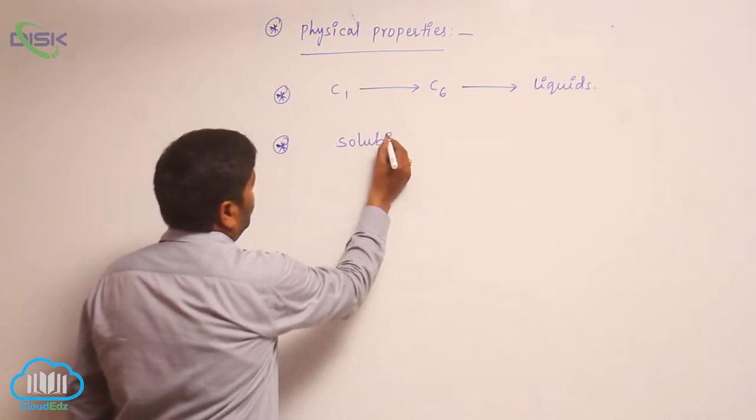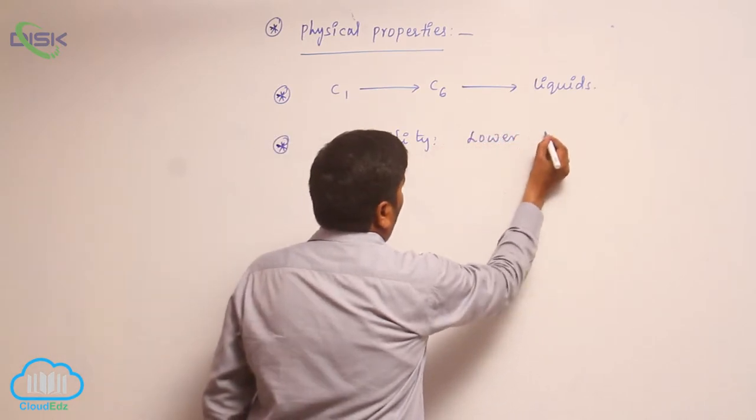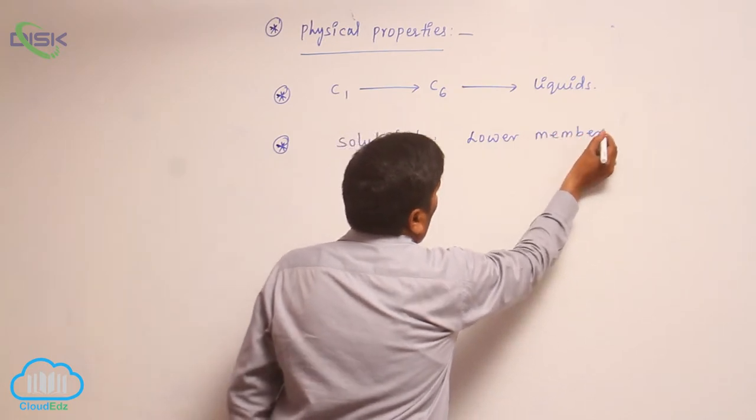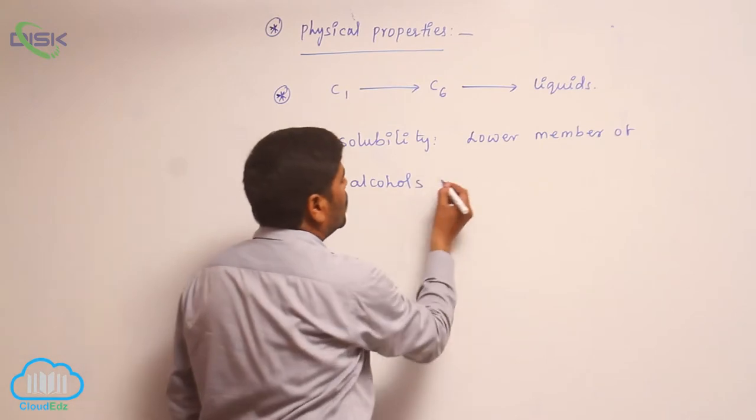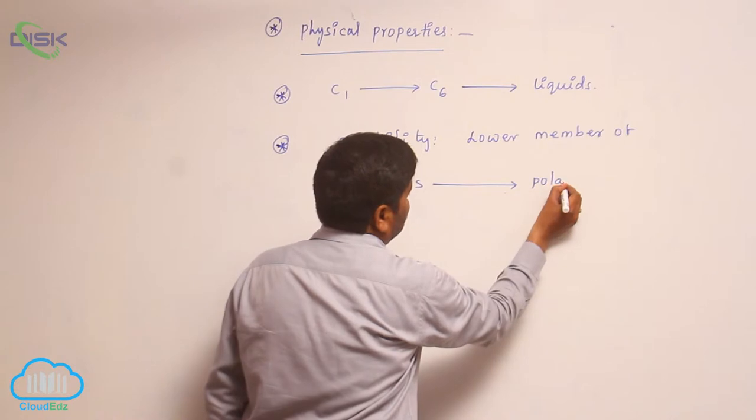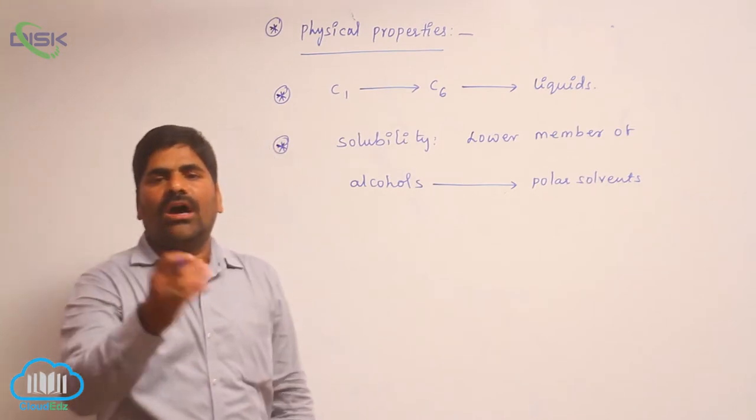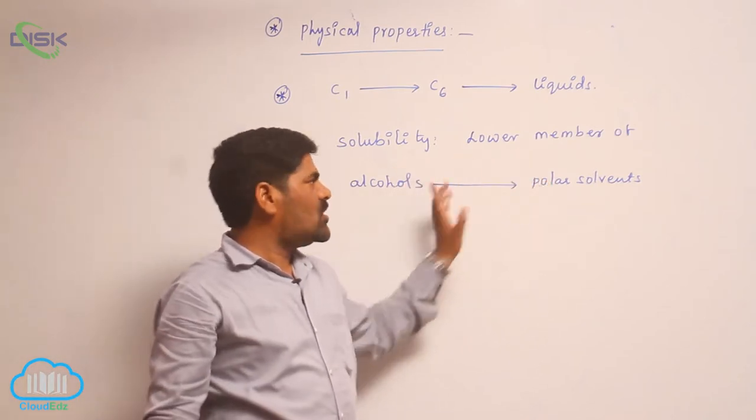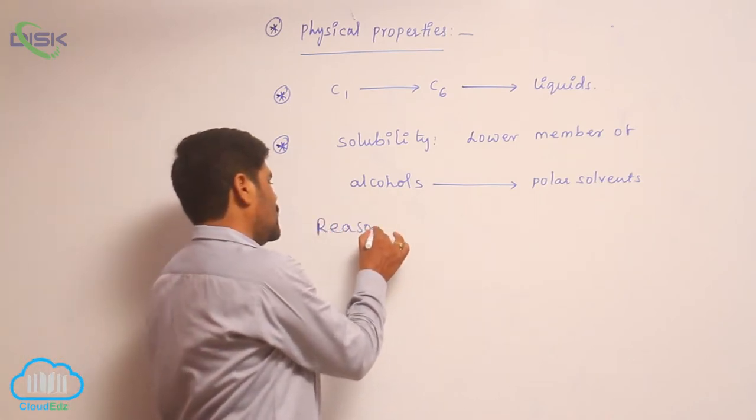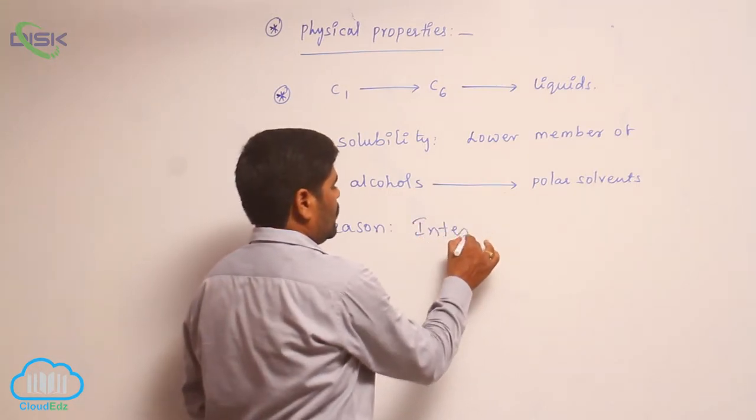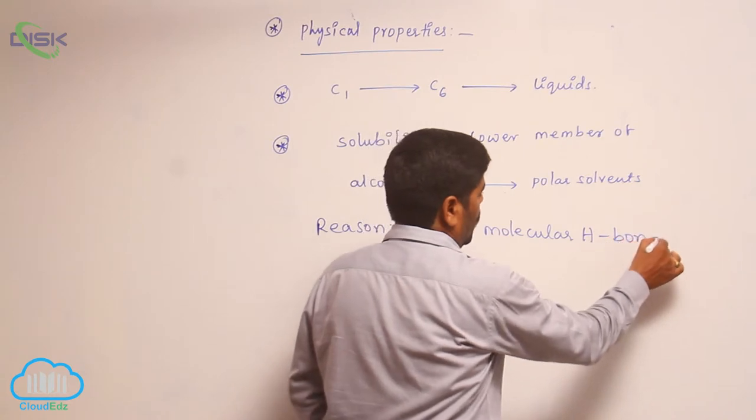Solubility: lower members of alcohols are mainly soluble in polar solvents. The reason is intermolecular hydrogen bonds.